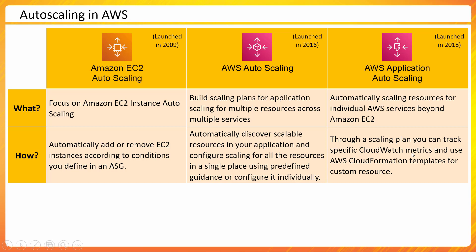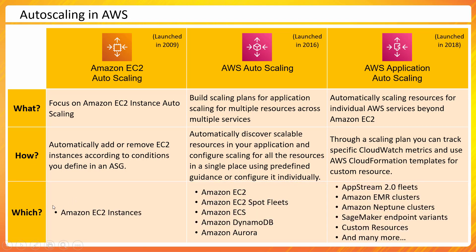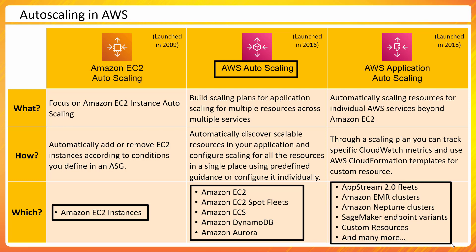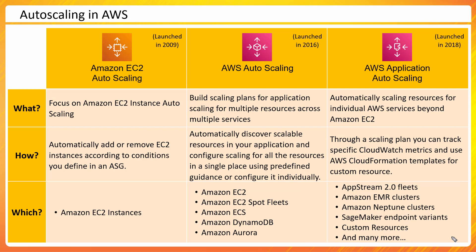In terms of services covered: Amazon EC2 Auto Scaling covers EC2 instances. AWS Auto Scaling extends to Spot Fleet, ECS, DynamoDB, and Aurora — a broader scope. AWS Application Auto Scaling goes even further, covering Amazon EMR, Neptune, AppStream, SageMaker, and custom resources, giving you the broadest spectrum of services to include in your auto scaling setup.